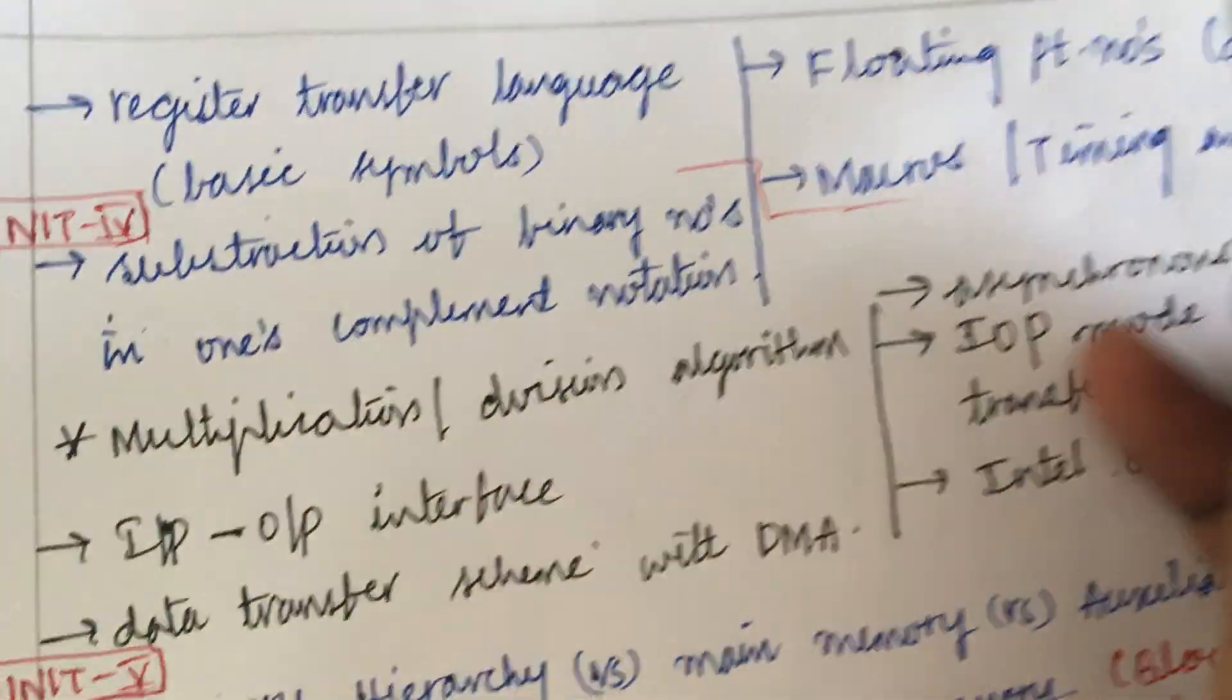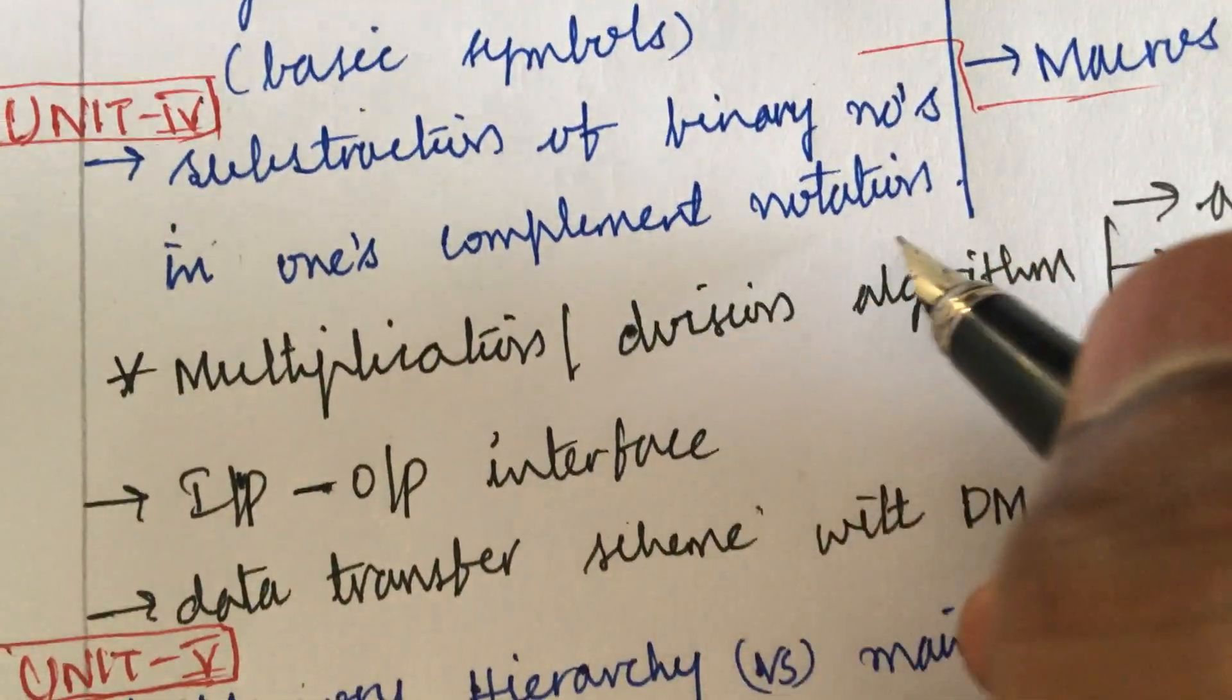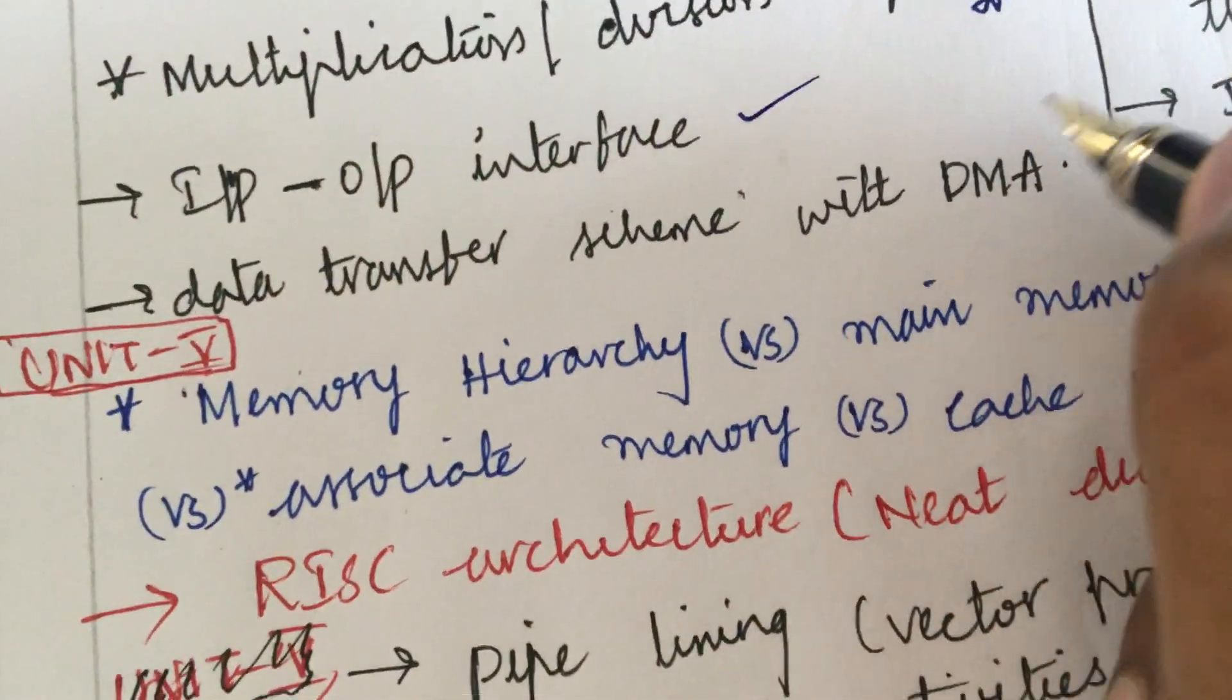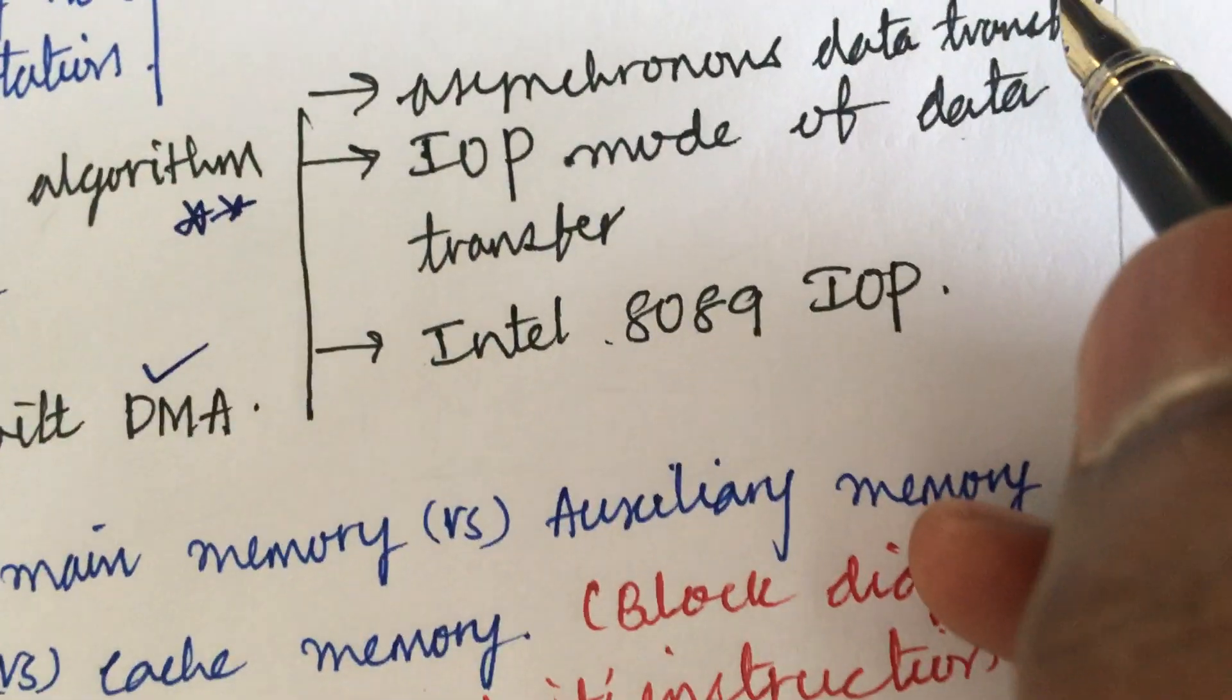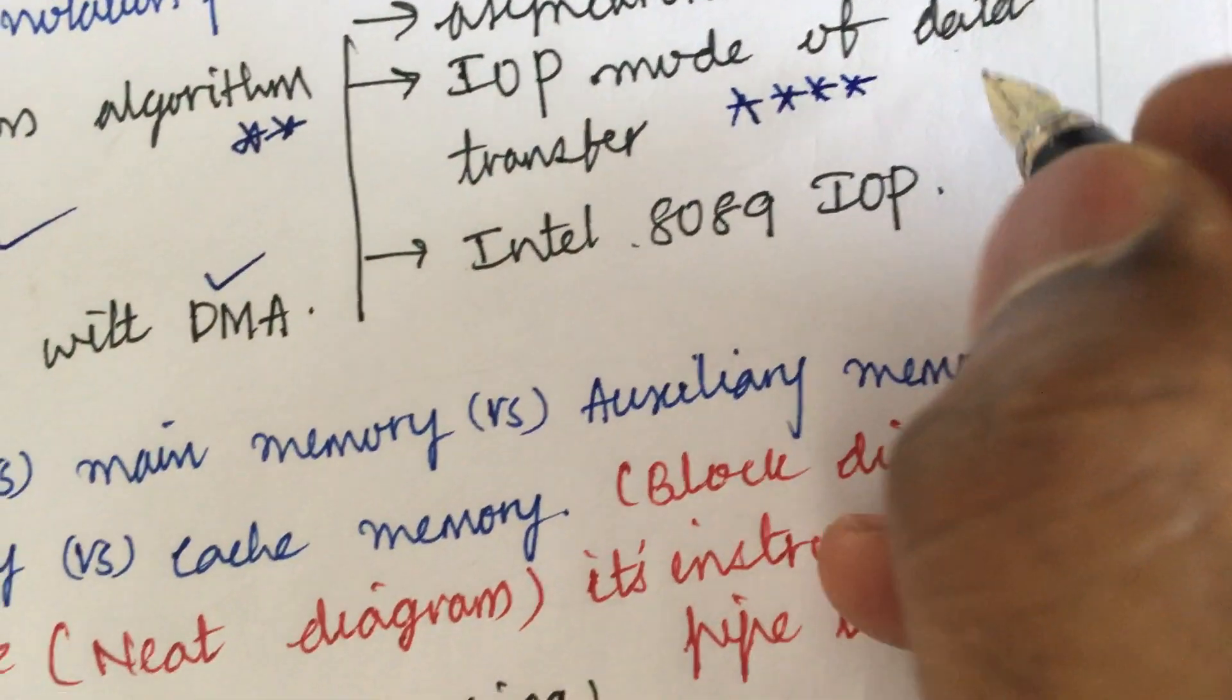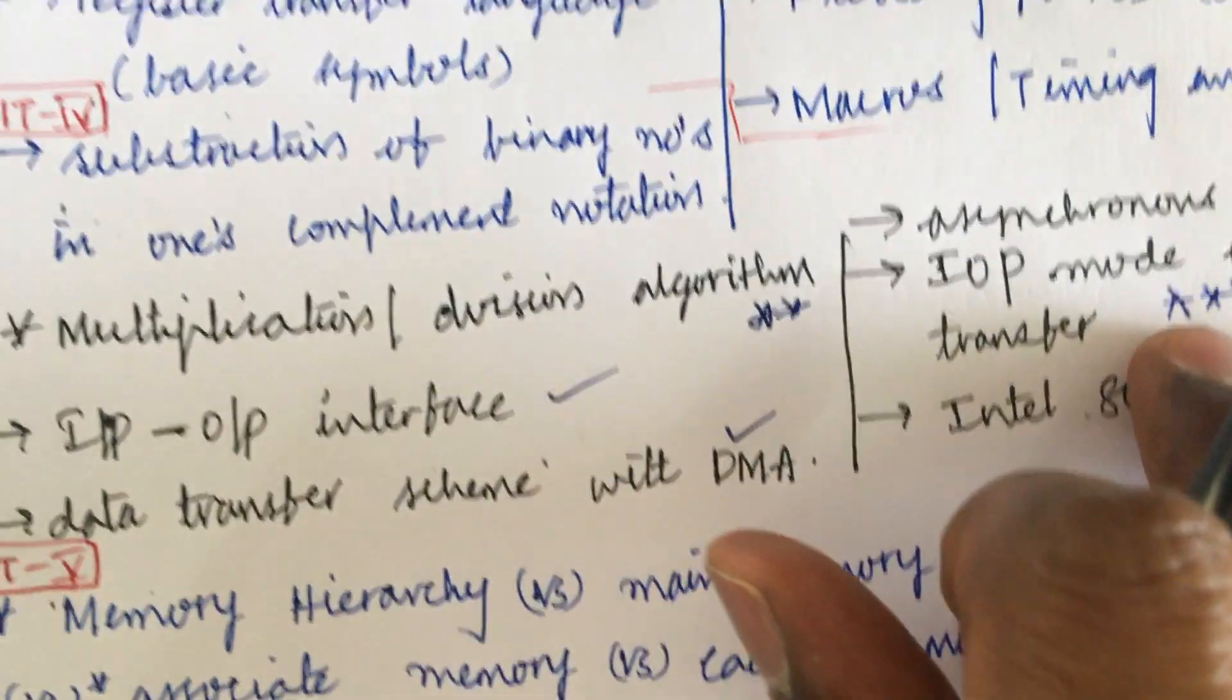The next is the fourth unit is about the floating point numbers and the subtraction of binary numbers in ones complement notation. Multiplication or division algorithm is set with the topmost question. Input output interface short question, data transfer scheme with DMA is a short question and the asynchronous data transfer and IOP mode of data transfer is set with the topmost question. Intel 8089 IOP, these all are set with the short and the long questions for the course COM under Unit 4.